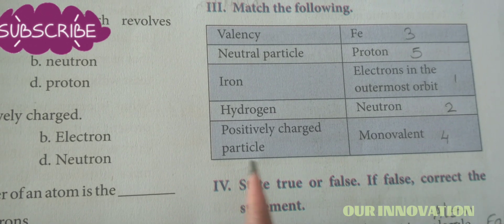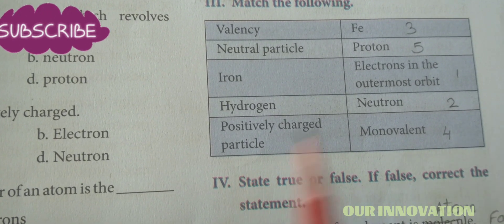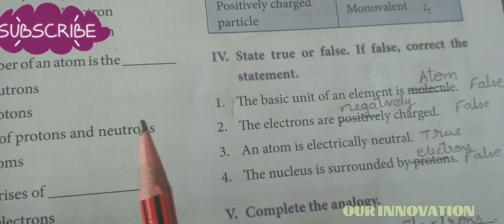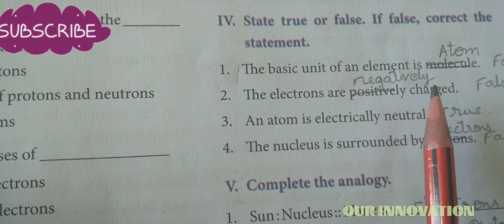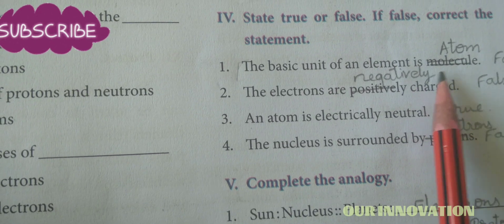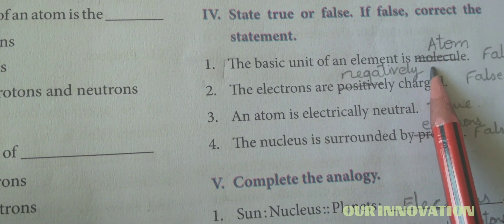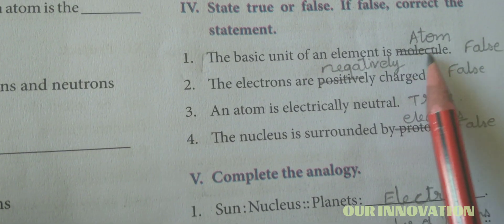State true or false. If false, correct the statement. The basic unit of an element is molecule—so molecule is the wrong answer. Atom. The answer is false, it should be atom.